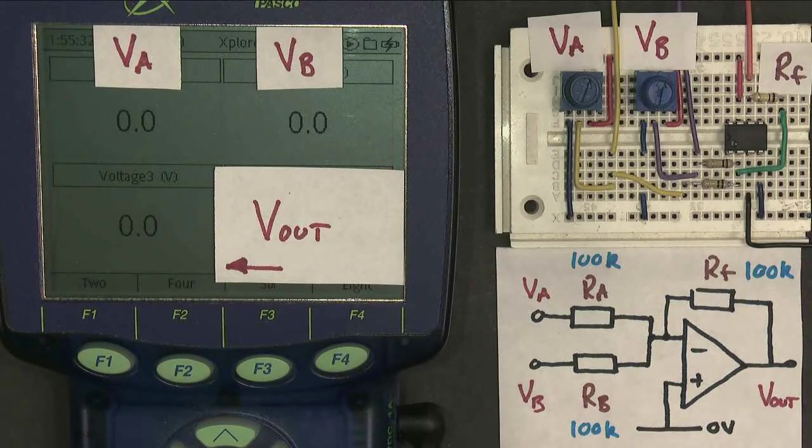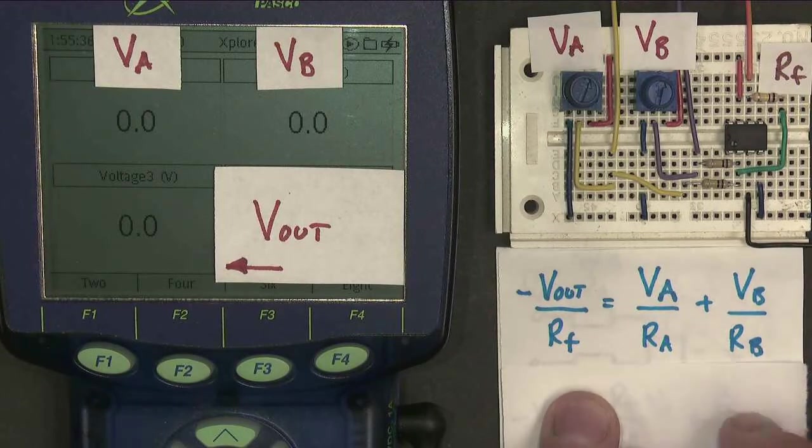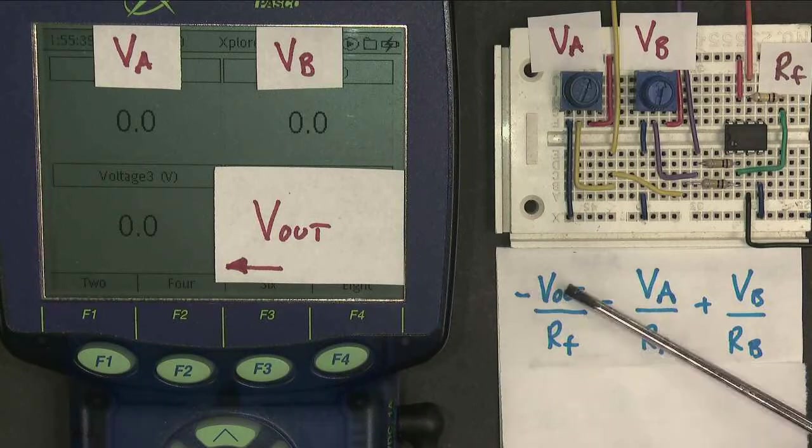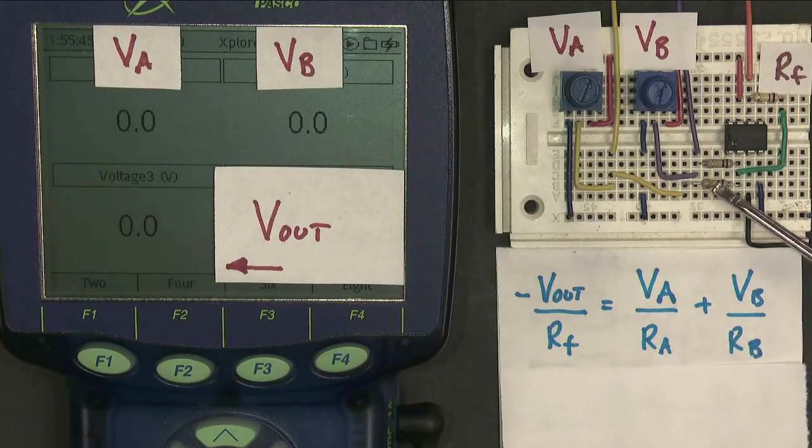Now, my gain equation, well, it's not really my gain equation, my output voltage equation looks like this. The output is negative when the inputs are both positive. You have a feedback resistor, input resistor RA, this one just here, input resistor RB, this one just here.